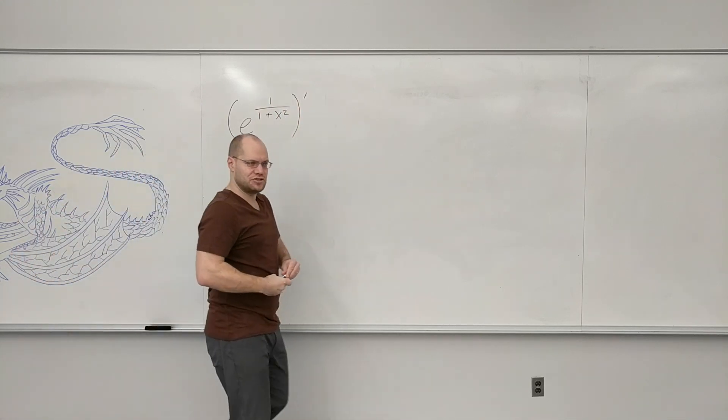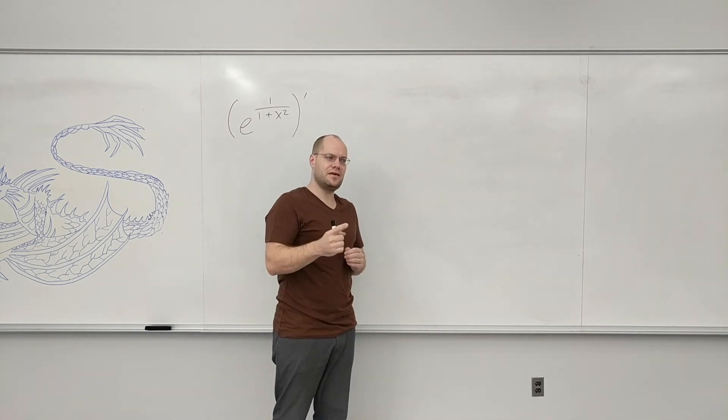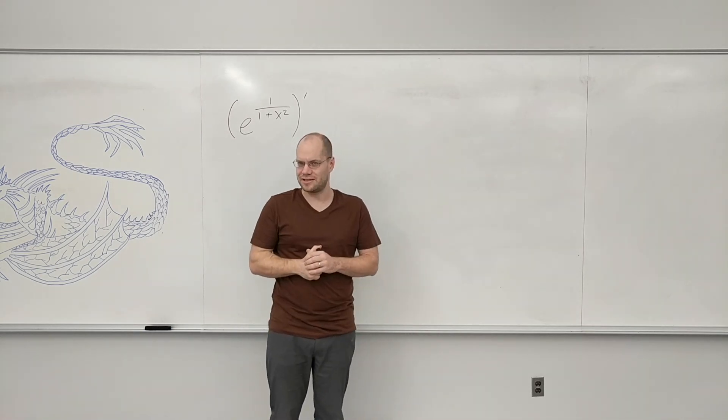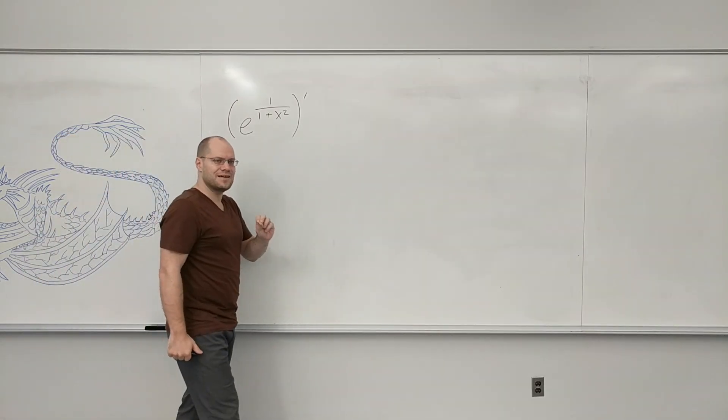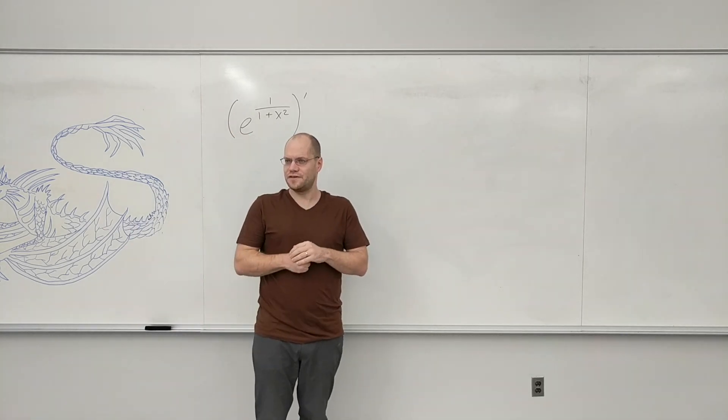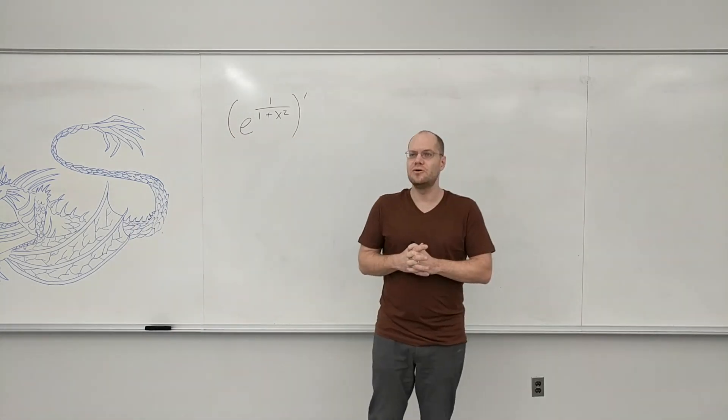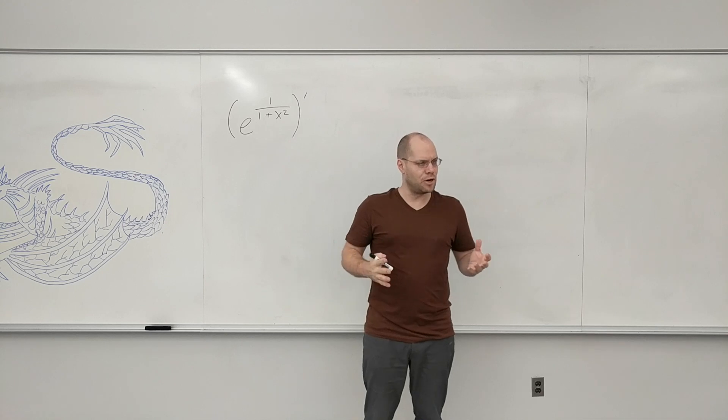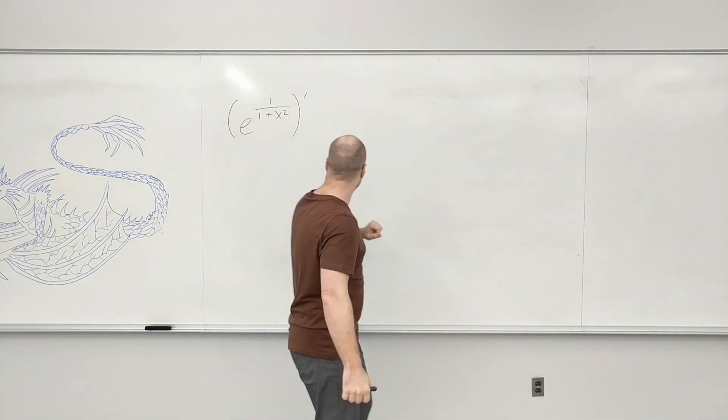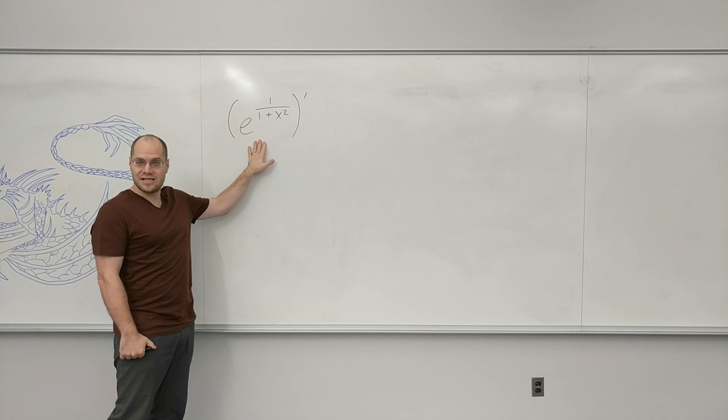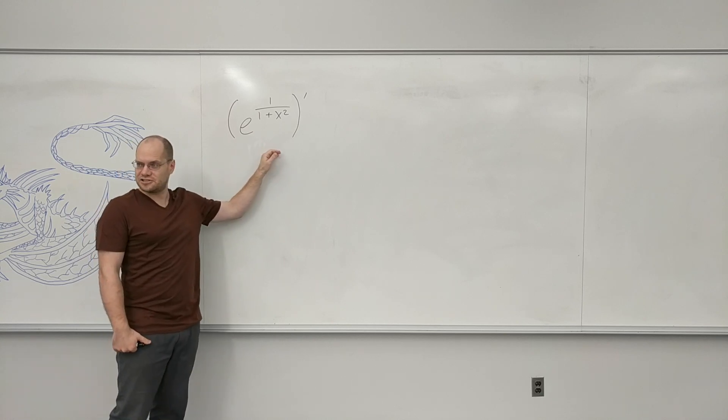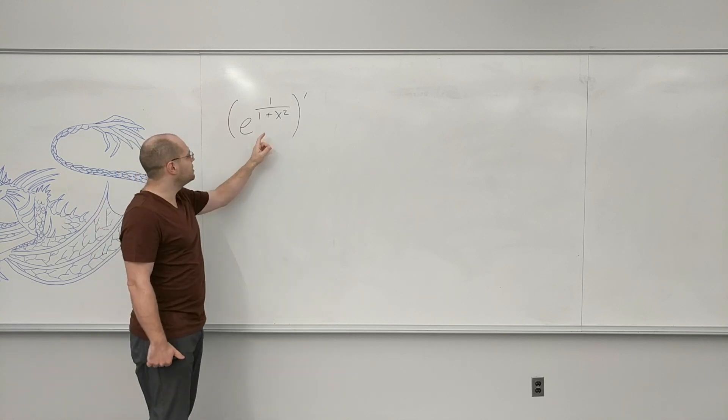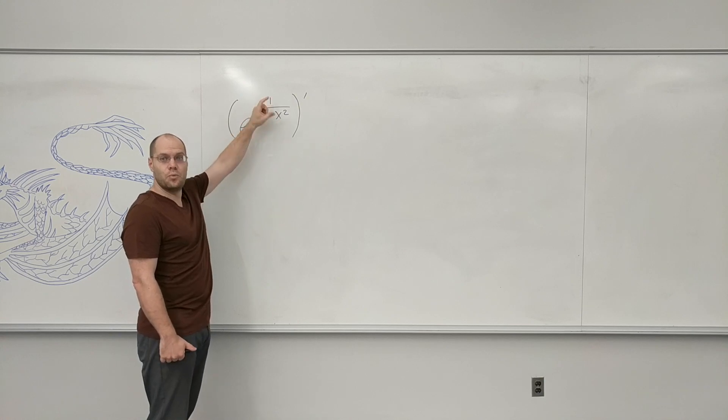Obviously this is an application of the chain rule. The key to doing the chain rule correctly is to recognize very precisely the structure of the function, and most importantly to identify the outermost structure. When you look at this, you see lots of things going on: exponentiation, squaring, one over...